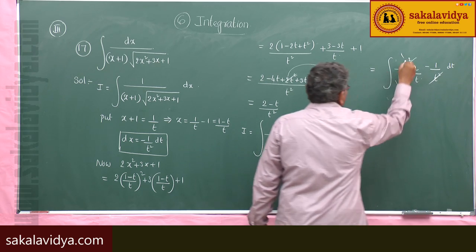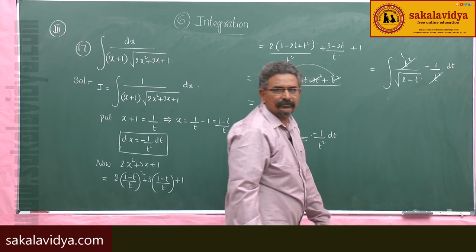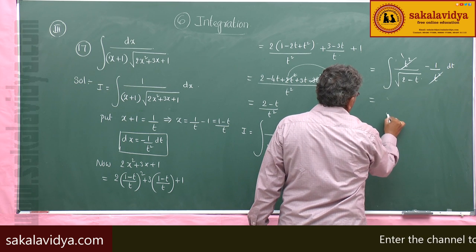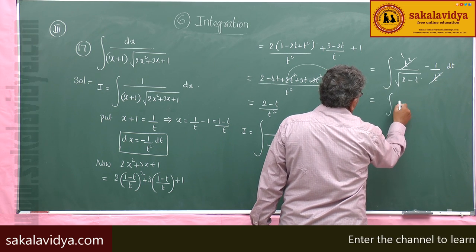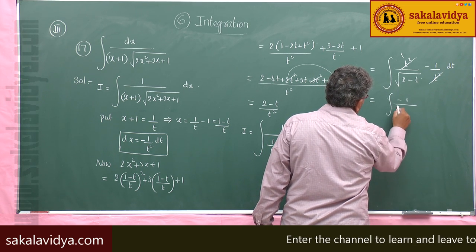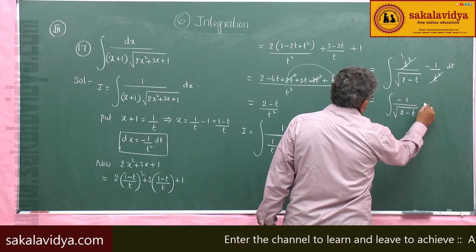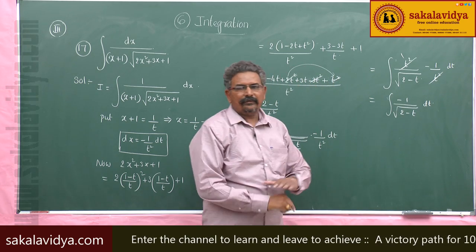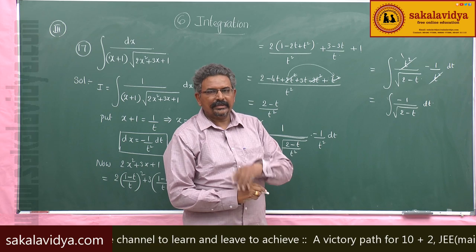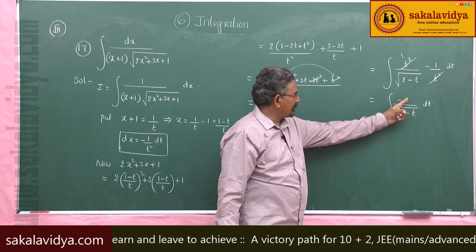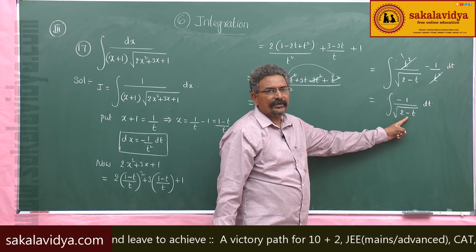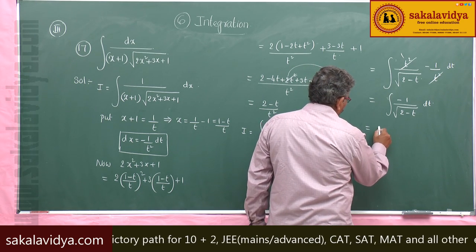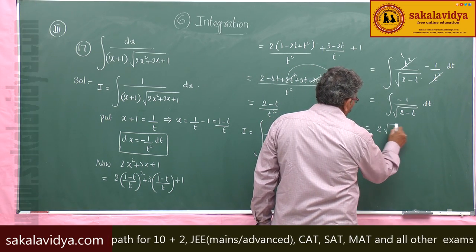Cancelling terms, we have integral of minus 1 by root of (2 minus t) dt. The derivative of (2 minus t) with respect to t is minus 1, so this is in the form f'(x) by root f(x) dx. Therefore the result is 2 root of (2 minus t).